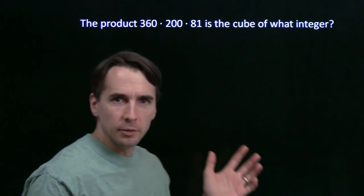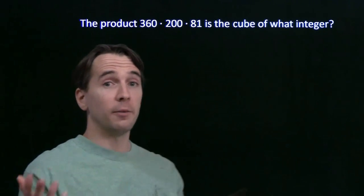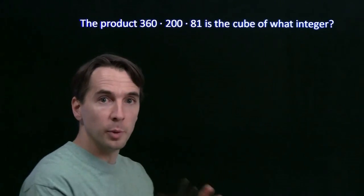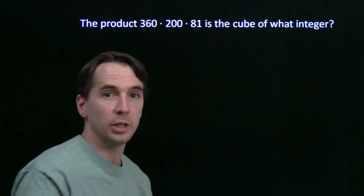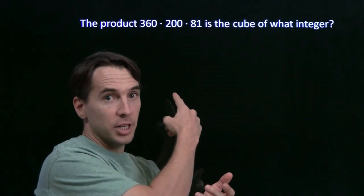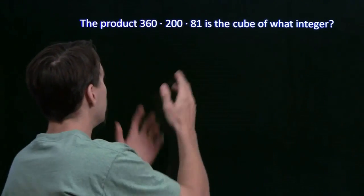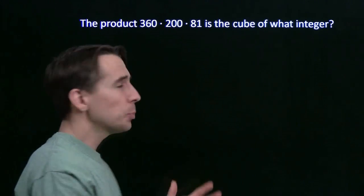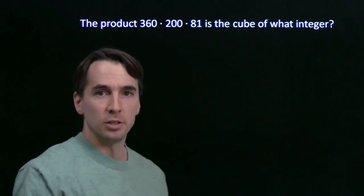Now when I see a product of integers, one thing I like to think about is prime factorization. So I think of the primes as building blocks of the integers. There's just one group of primes you can multiply together to get 360, that's the prime factorization of 360. Same thing for 200 and for 81, so I'm going to start this problem just by finding the prime factorizations of these three numbers.